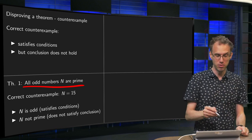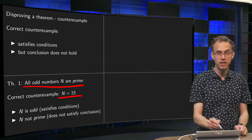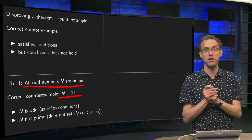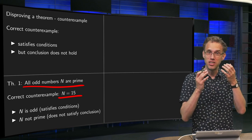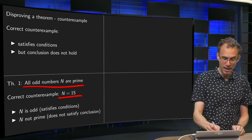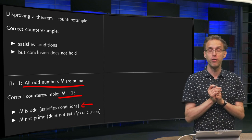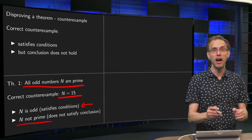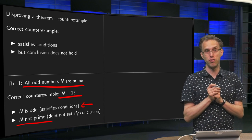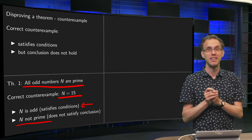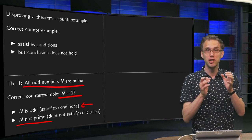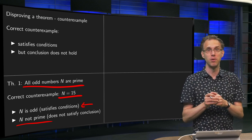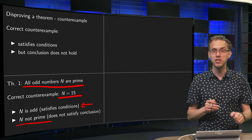What is a correct counterexample? Well, because the theorem is not true, a correct counterexample would be n equals 15. Why does this disprove the theorem? Well, n is odd — 15 is an odd number — so it satisfies the condition. However, n is not prime, so it does not satisfy the conclusion of the theorem. That is why this example disproves the theorem and is a correct counterexample: n is not prime because n equals 3 times 5.